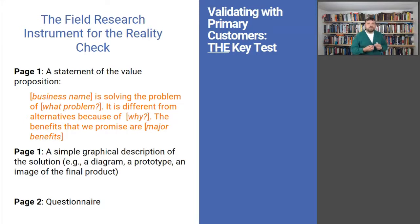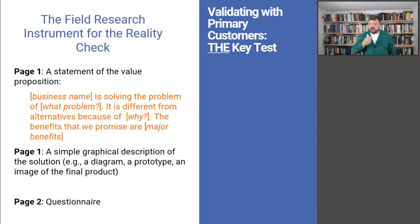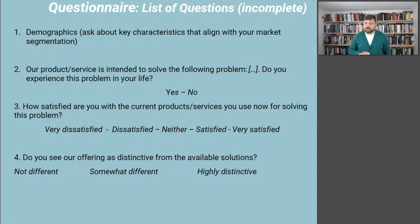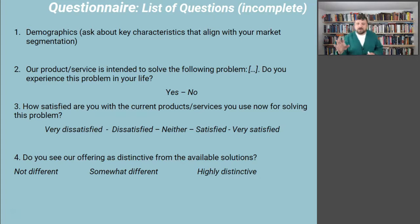One reason we do prototyping is to clearly communicate and get feedback from customers. So page one presents the value proposition to primary customers and a prototype or diagram of the solution. Then page two is the questionnaire. Question one is demographics — whatever segmentation you need: gender, socioeconomic status, occupation. Question two: our product or service is intended to solve the following problem — do you experience this problem? This checks whether they are a potential customer, though I'd phrase it as 'do you feel this pain?' rather than 'are you a potential customer?'